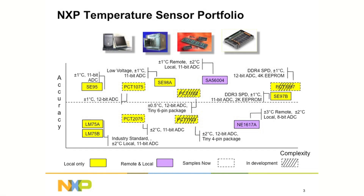This graphic shows the NXP I2C temperature sensor portfolio of devices, which include both ambient temperature — sometimes called local — and ambient plus remote, which uses a discrete diode as a temperature probe. NXP offers a broad line of industry standard as well as proprietary thermal sensors.